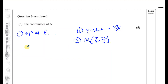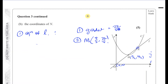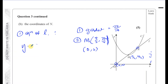Now we have enough information to find the equation of line L. Looking back at the diagram, the line also passes through the origin, so the y-intercept is 0. This makes life easier — we can immediately say the equation of line L is y equals 27 over 10 times x. The line passes through the origin, so we don't need to calculate the y-intercept separately.